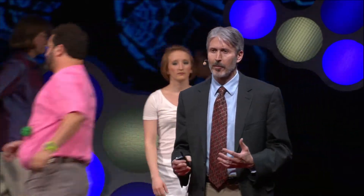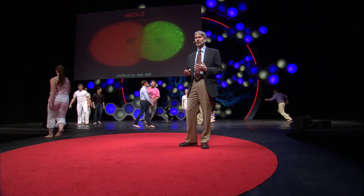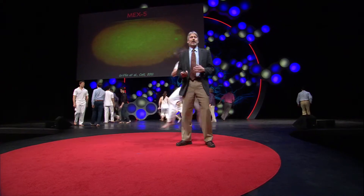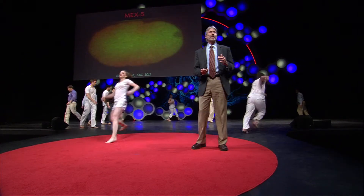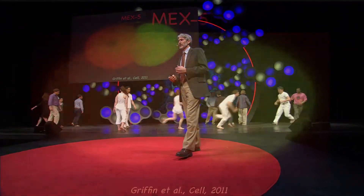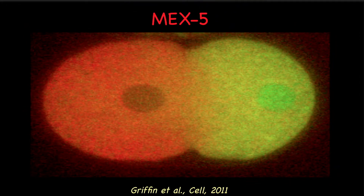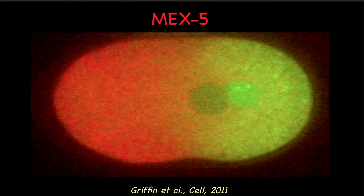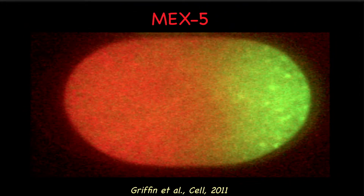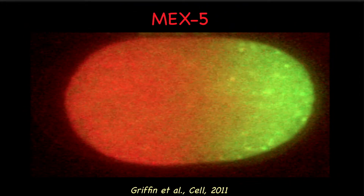Immediately after fertilization in the worm known as C. elegans, symmetry is broken by an ensemble of molecules, including MEX5, shown in red. In this movie, obtained by my colleagues Eric Griffin and Geraldine Seydoux, MEX5 initially starts out uniformly distributed in the cell, but within a matter of minutes is concentrated on the left side.